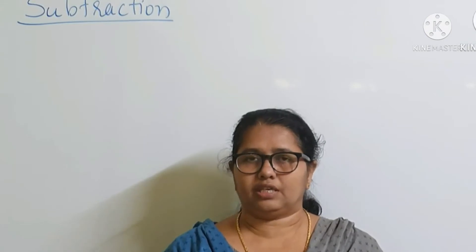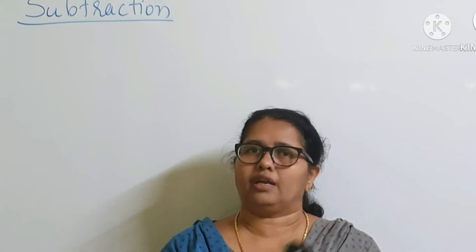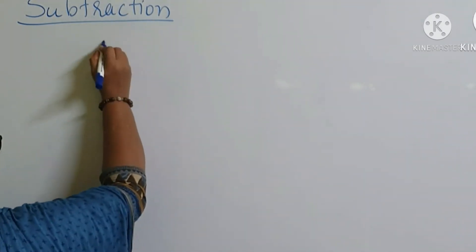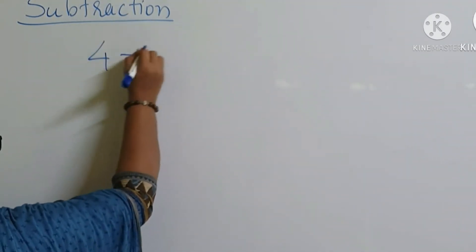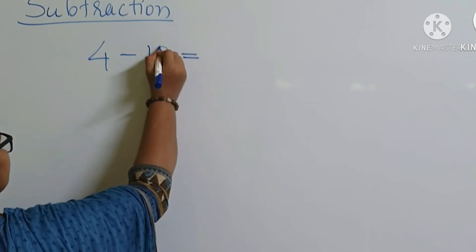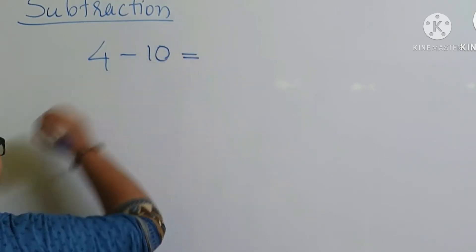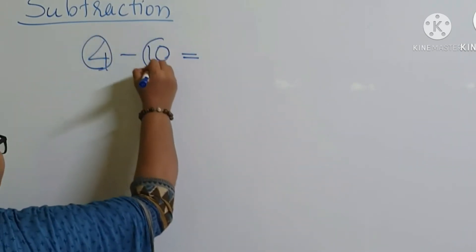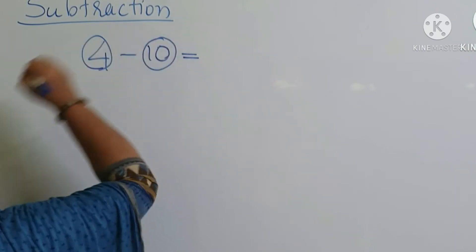Subtraction is the opposite of addition. So we can change subtraction to addition and apply the rules for addition. For example, 4 minus 10 — here we are subtracting 4 and 10.